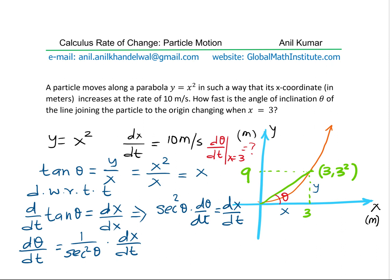So we are given dx dt, which is 10 meters per second. We need to find at this instance what is the value of secant theta. So from here, we can actually get our answer. So we can say what is d theta dt when x is equal to 3.